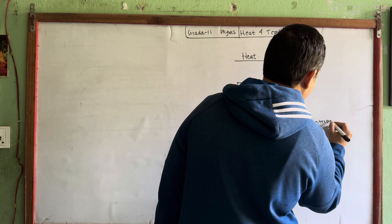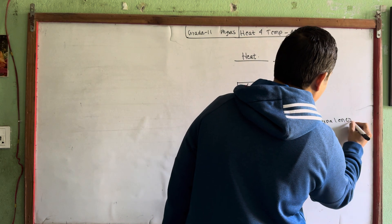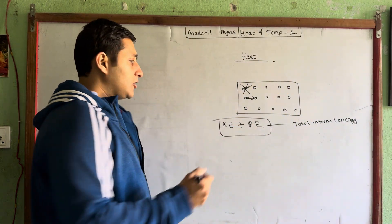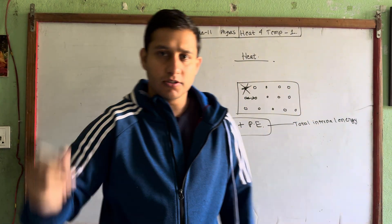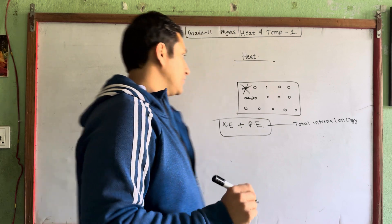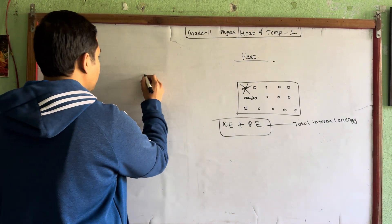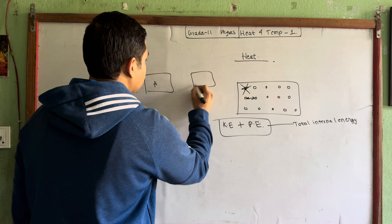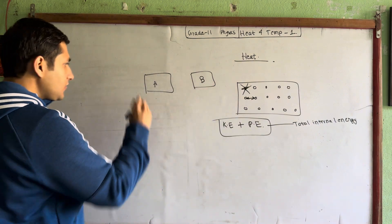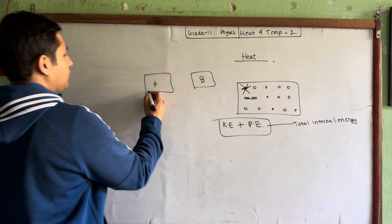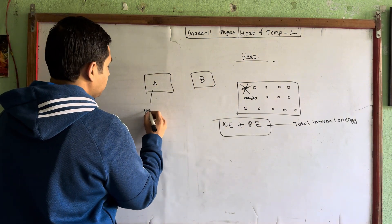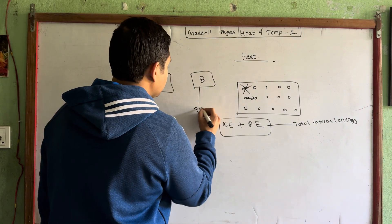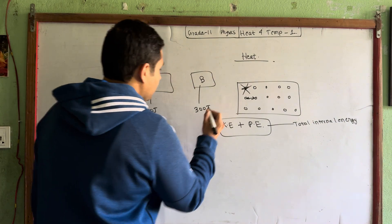Internal energy — this is the total internal energy. Just imagine this is a body. Suppose body A has a total internal energy of 1000 joules, and body B has a total internal energy of 300 joules.